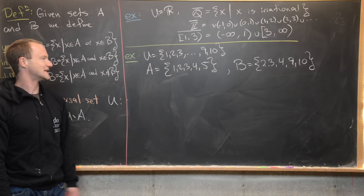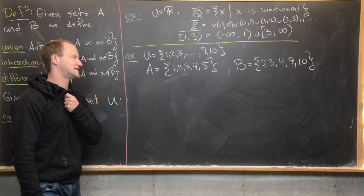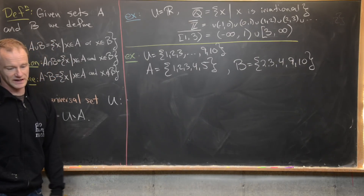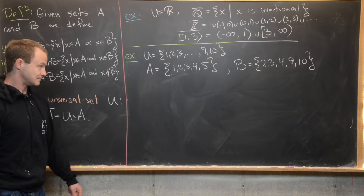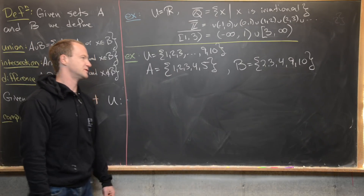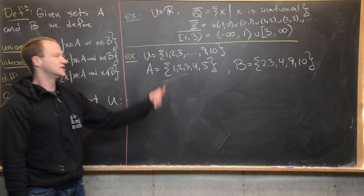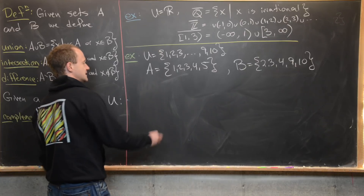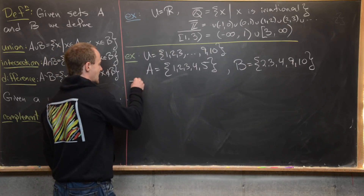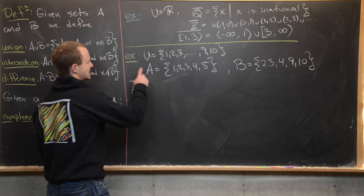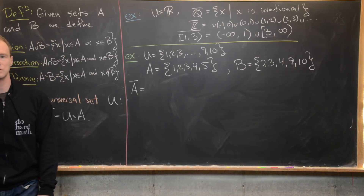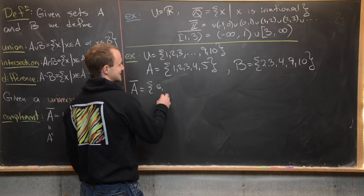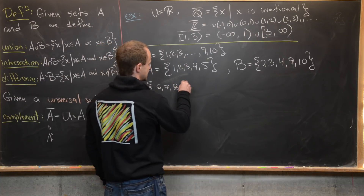Now let's say our universal set U is the natural numbers from 1 to 10. Let A = {1, 2, 3, 4, 5} and B = {2, 3, 4, 9, 10}. The complement of A is everything in U not in A, which gives us {6, 7, 8, 9, 10}.